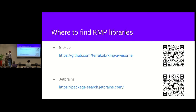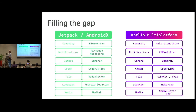You can find more libraries on a GitHub repository. JetBrains also provides a package search — I hope you can scan the QR codes. So we can fill the gap: we've got something for biometrics, notifications, camera, etc. We could build a full multiplatform app without worrying too much about actual implementation.